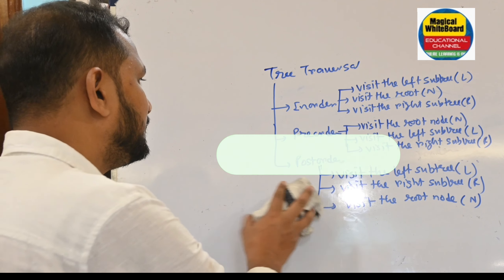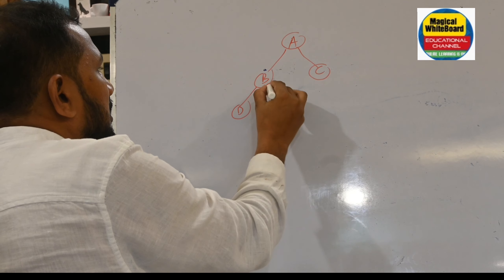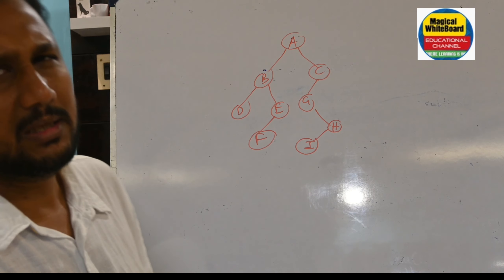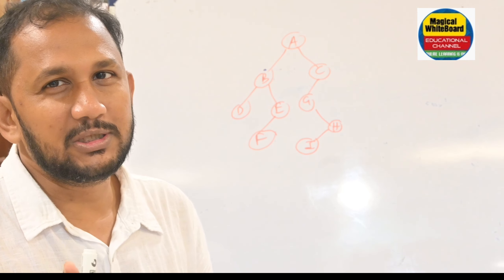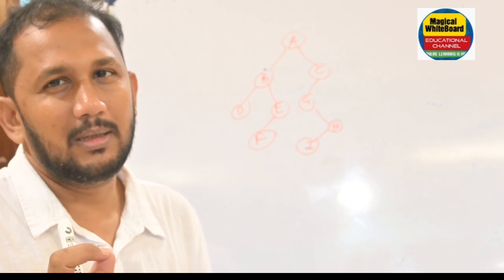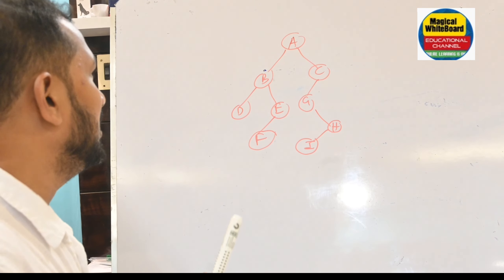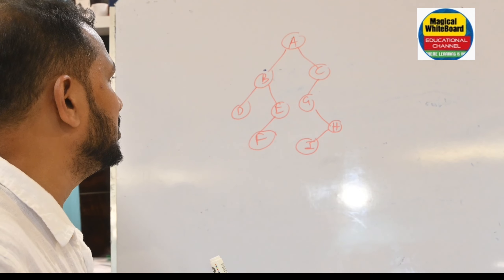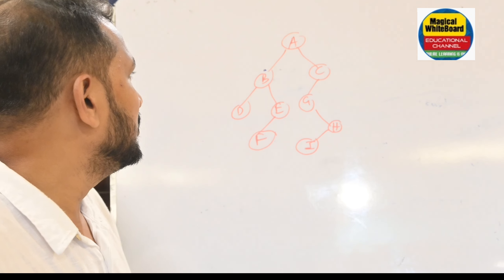Let us consider a binary tree example with nodes A, B, C, D, E, F, G, H, and I. A binary tree is one where every node must have either two children, one child, or none. In this tree, A is the root node, B is the left child and C is the right child of A. Leaf nodes — those with no children — are D, F, and I.